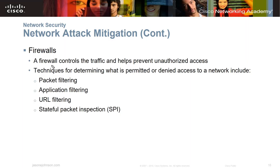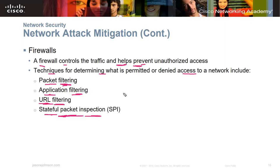Firewalls control traffic and help prevent unauthorized access — they don't stop 100%, but they help. Techniques include packet filtering, application filtering, URL filtering, and stateful packet inspection. With stateful inspection, only packets that originated from inside the LAN are allowed back in, ensuring traffic coming back has a verified internal origin. Endpoint security covers laptops, desktops, servers, smartphones, and tablets — all are at risk. Bring-your-own-device policies are particularly challenging.